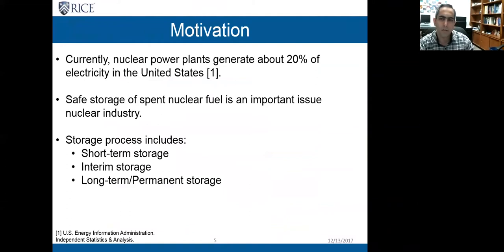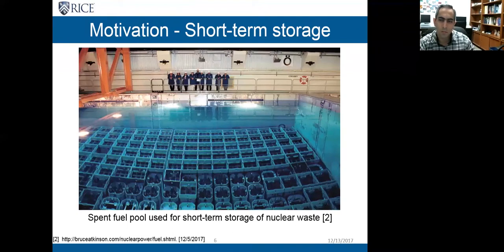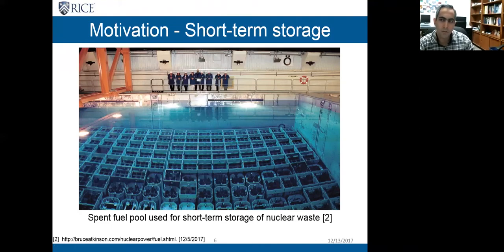Currently, about 20% of the electricity in the United States comes from nuclear power plants, and safe storage of spent nuclear fuel is a very important issue in this industry. The storage process usually has three major steps: short-term storage, interim storage, and long-term storage. For short-term storage, special pools called spent fuel pools are used, where the spent fuel is kept below water. Water circulation cools down the fuel and acts as shielding for radiation. The spent fuel must remain in these pools for at least five years before being transported to interim storage facilities.